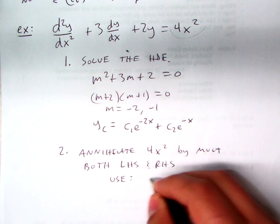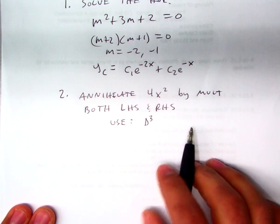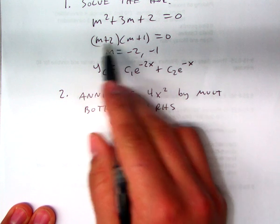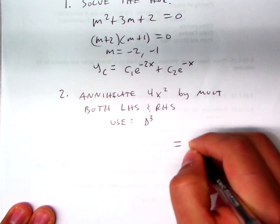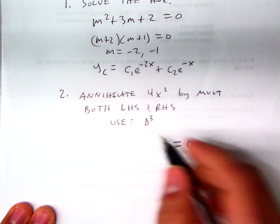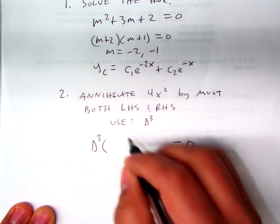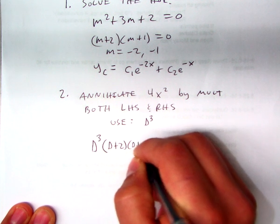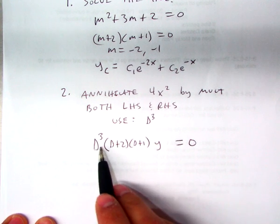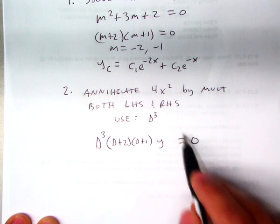And we're going to multiply both left-hand side and right-hand side by the same differential operator. So what do we use to annihilate 4x squared? So we're going to have d cubed. And now what we'll do is apply it to not only the left-hand side, but the right-hand side. So on the right, we get 0. And I'm just going to switch formats from auxiliary to differential operator notation. We're applying d cubed. We're still going to have d plus 2, d plus 1.